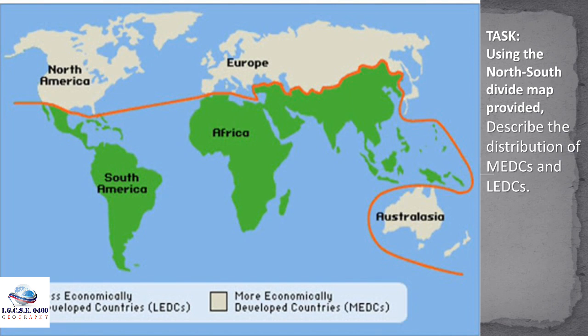Here you see a map of the world with two colors. Green shows less economically developed countries, which are basically located south of the red line. Above the line, we have more economically developed countries in northern America and Europe. Also in the south, there is Australia and New Zealand as part of the MEDCs. The task is to describe the distribution of MEDCs and LEDCs using this north-south divide map.